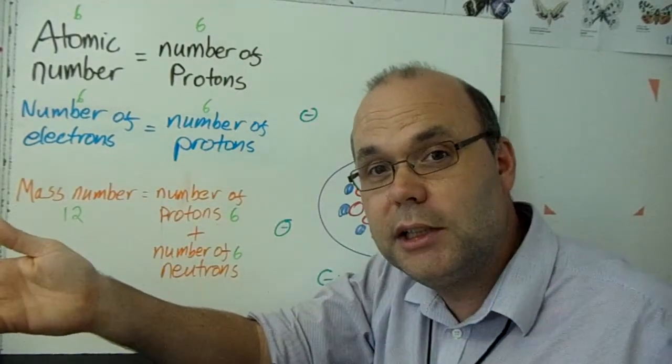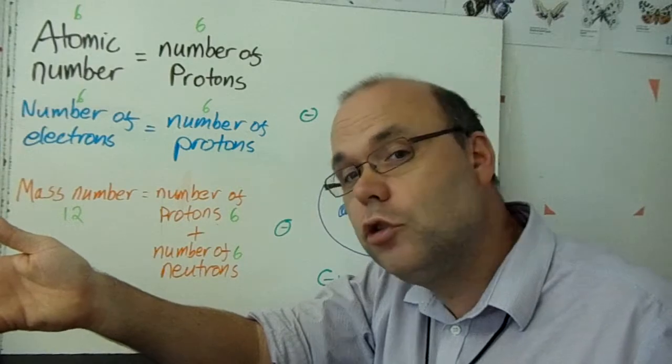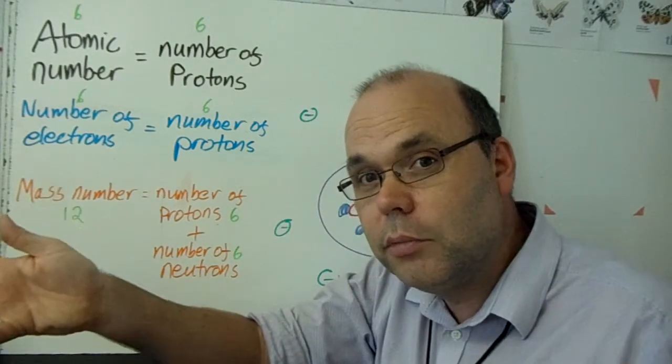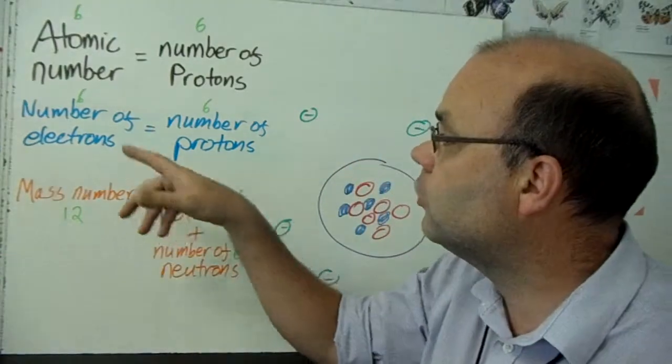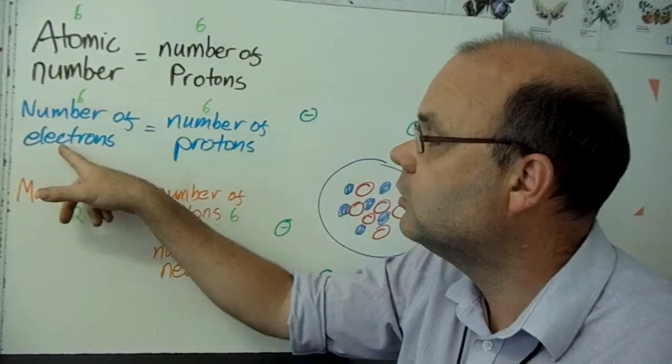We've got pluses, minuses. If everything's neutral in an atom, they've got to be the same. So we know we've got six protons, six electrons.